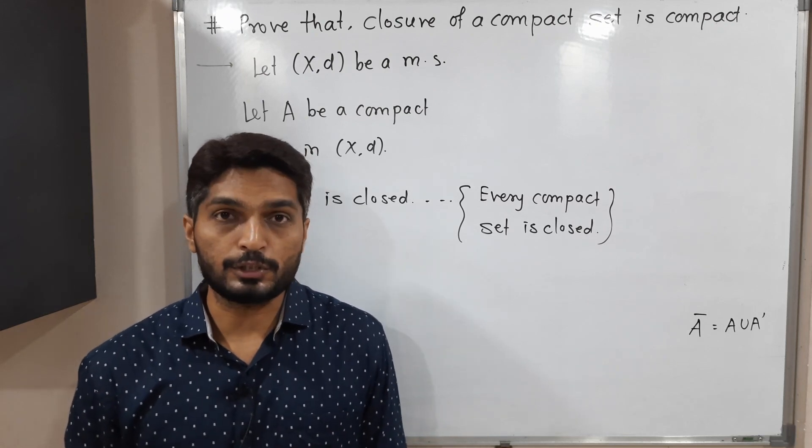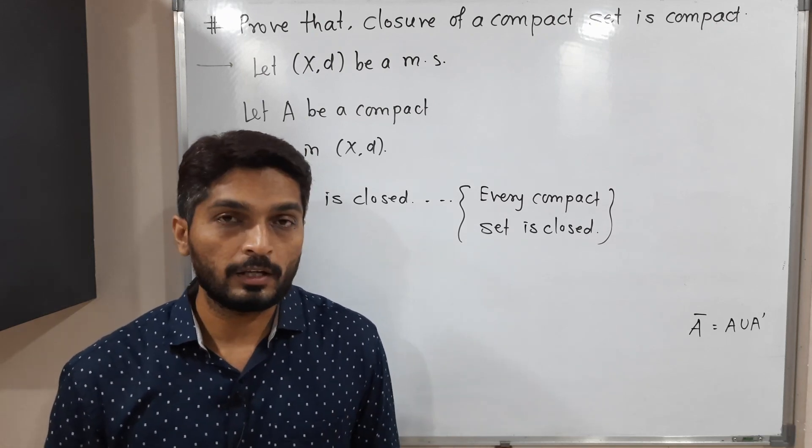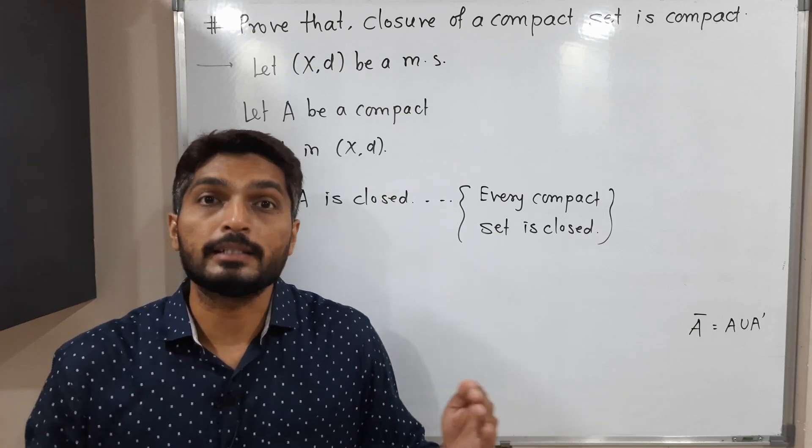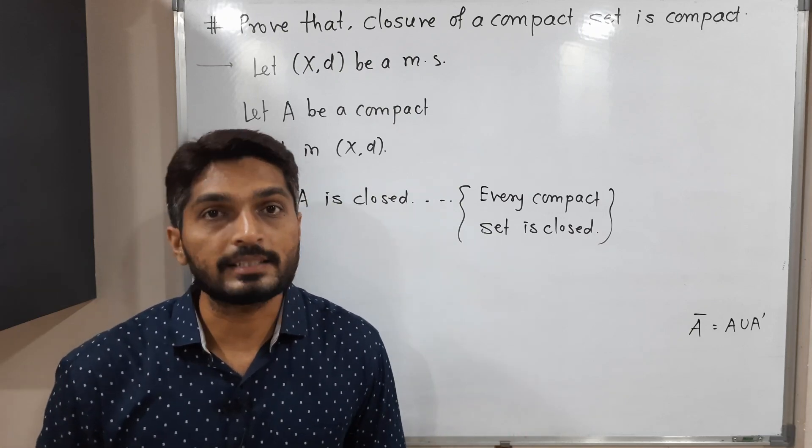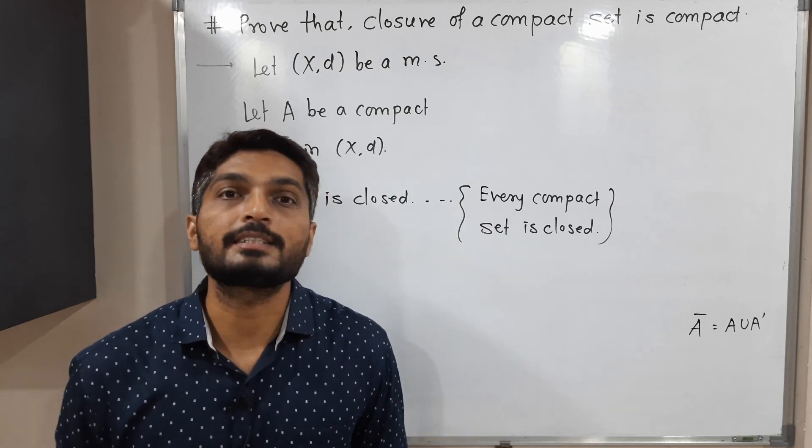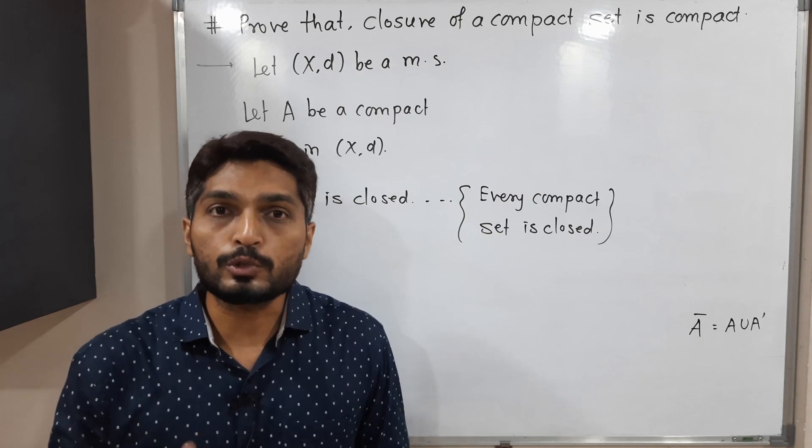When we say the set is closed, there are several definitions. The first definition is if its complement is open, we say the set is closed. If the set contains all its limit points, then also we can say the set is closed. The third definition is if A equals A bar, then we can say the set is closed. I am going to use the third definition: A equals A bar.